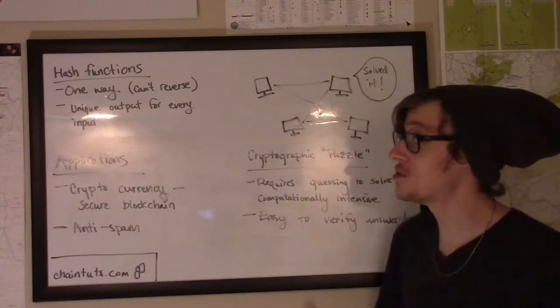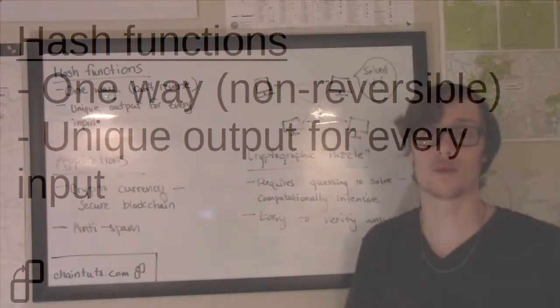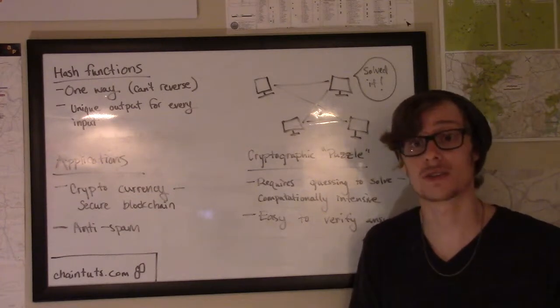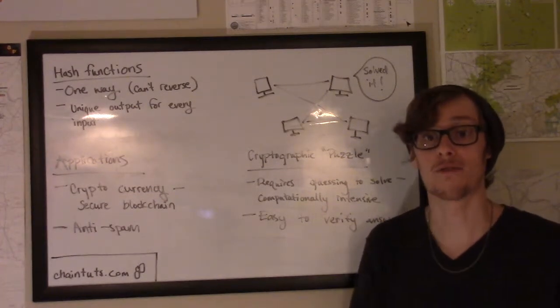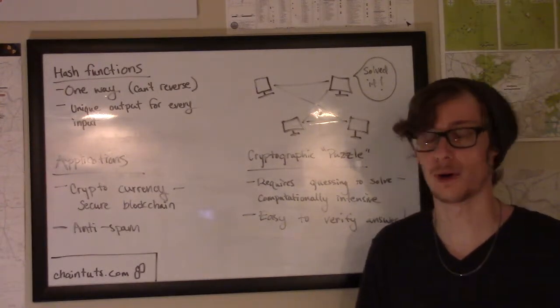There's also a unique output for every input to a hash function. So if you give the function the word hello with an uppercase H, the output or the hash will be very different than the word hello with a lowercase H. Some hash functions like the one used in Bitcoin have very radically different outputs even if one bit of data changes in the input.